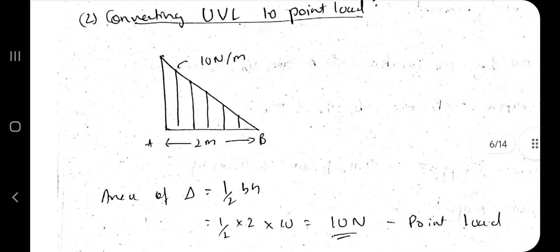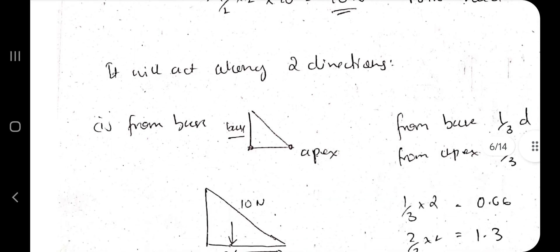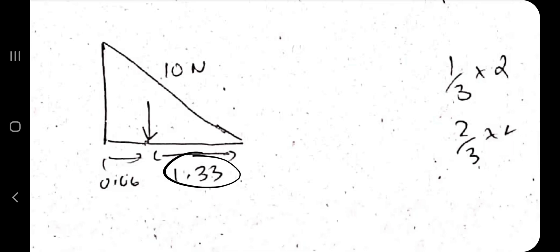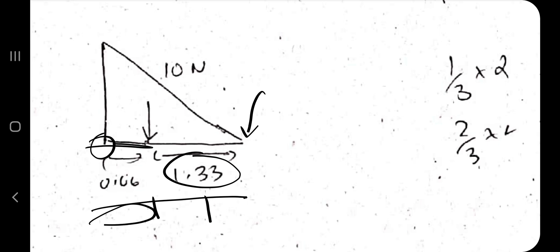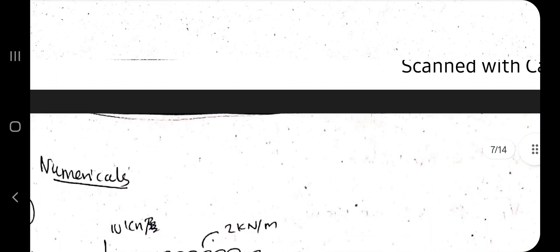Converting UVL into a point load is a bit more involved but still simple. Calculate the area of the triangular load: for example, half × 2 × 10 = 10. The resultant force of 10 N acts at specific locations — from the base it acts at 1/3 of the length (d/3), and from the apex it acts at 2/3 of the length (2d/3). Divide the length into three parts: from the base it is 1/3d, from the apex it is 2/3d. That's how you convert UVL into a point load.